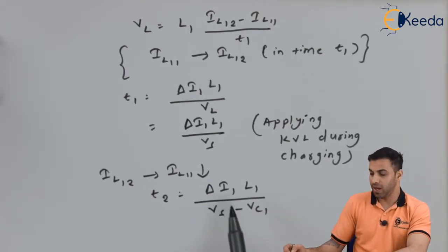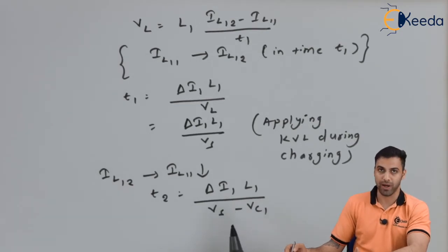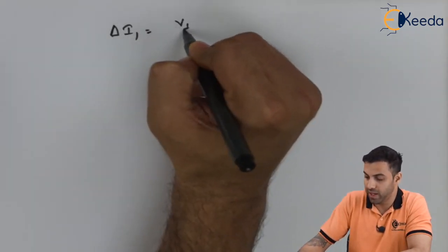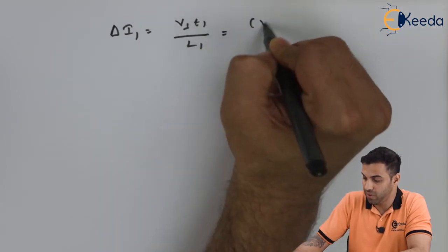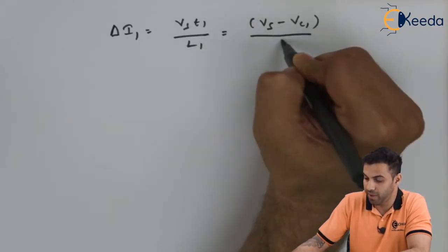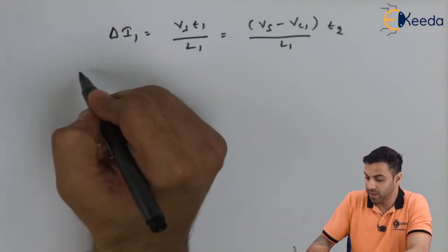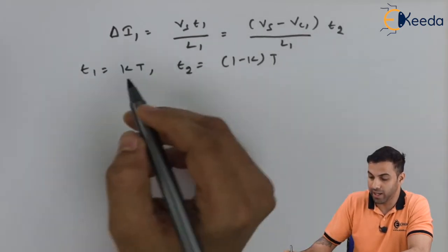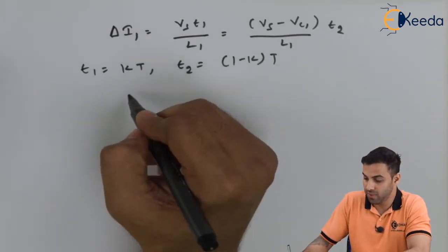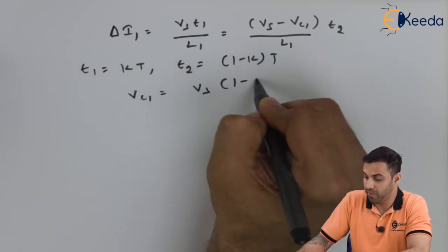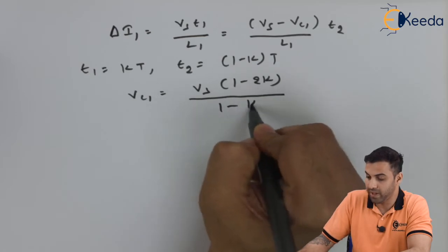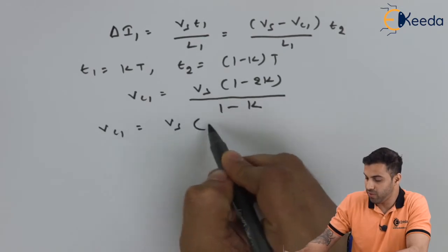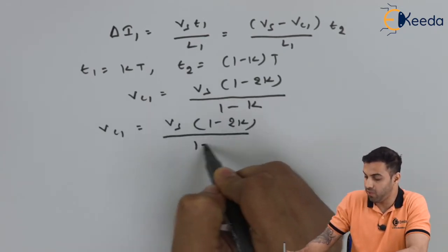Here, VS is the source voltage, Δi1 is the peak-to-peak ripple inductor current, and L1 is the first inductance. We get: Δi1 = VS·T1/L1 = (VS − VC1)·T2/L1. Substituting T1 = kT and T2 = (1−k)T, we derive VC1 = VS·(1 − 2k) / (1 − k).